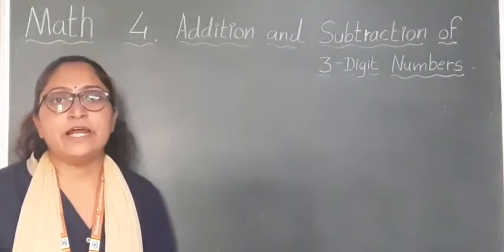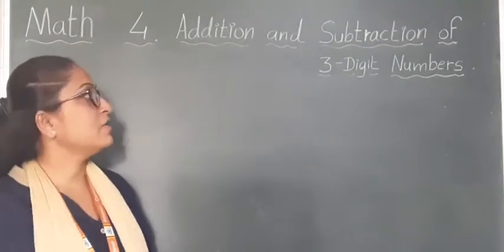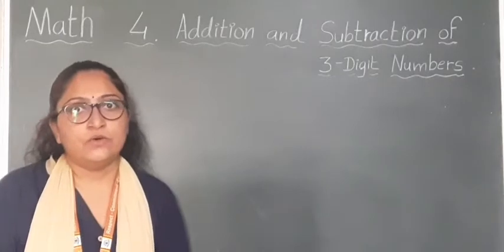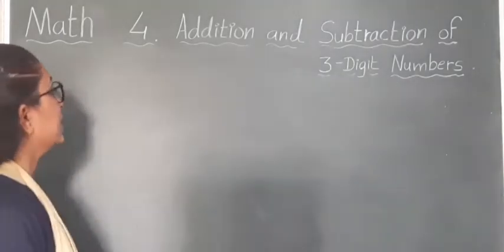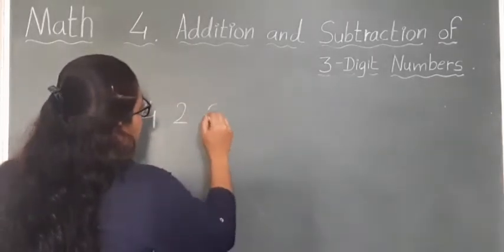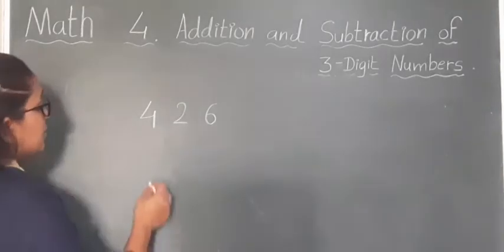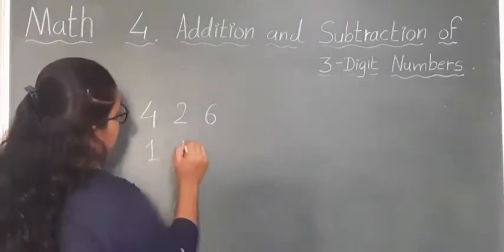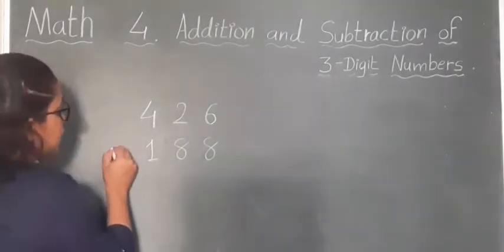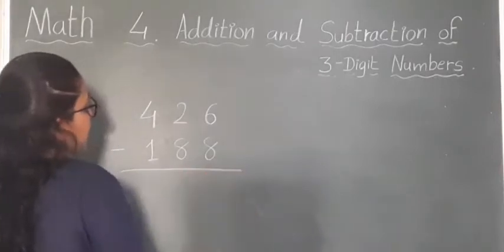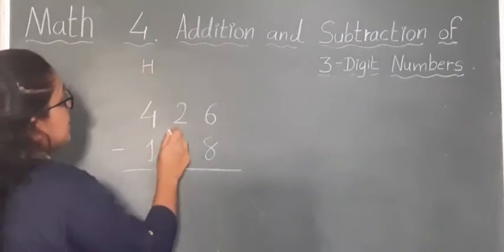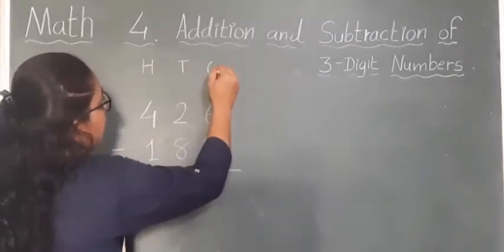Now let's see another example — subtraction of 3-digit numbers with regrouping of 10s and 100s. For example, if we have the number 426 as our first number, and the another number is 188. We have to subtract, so put a sign of minus here. Now mention the places: 100s place, 10s place, and 1s place.